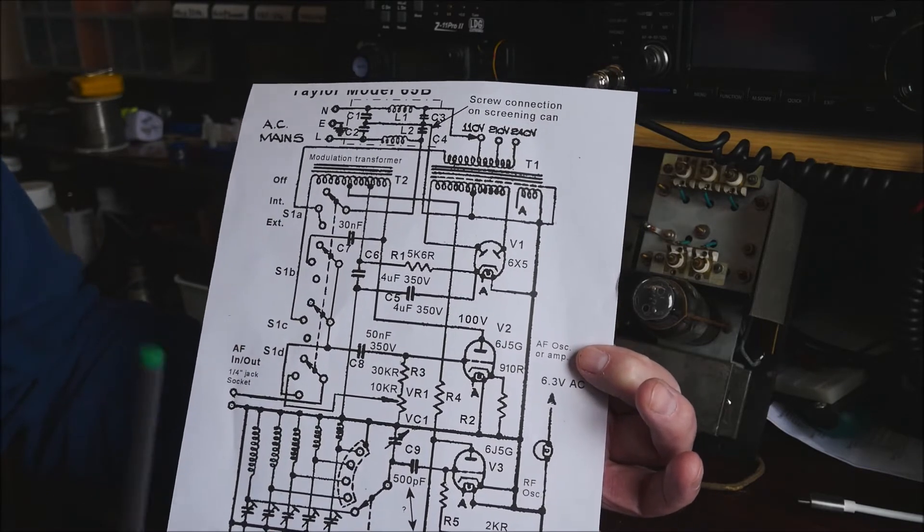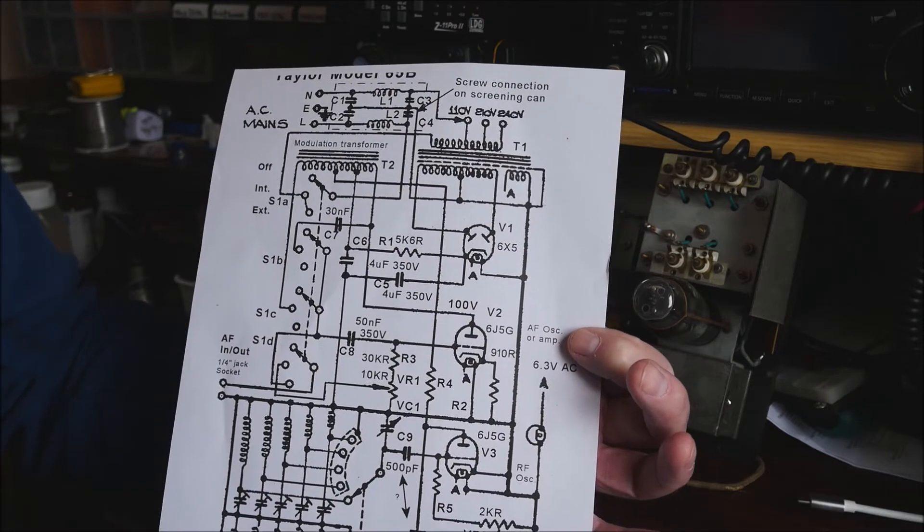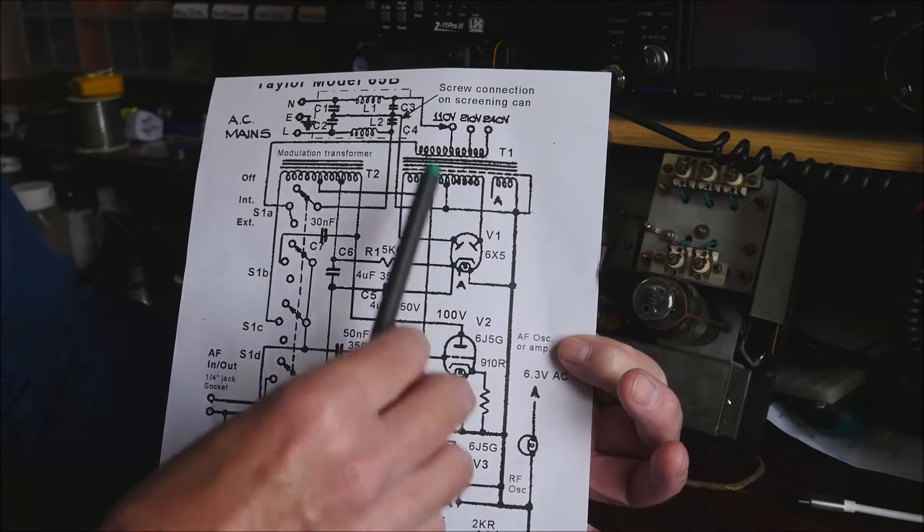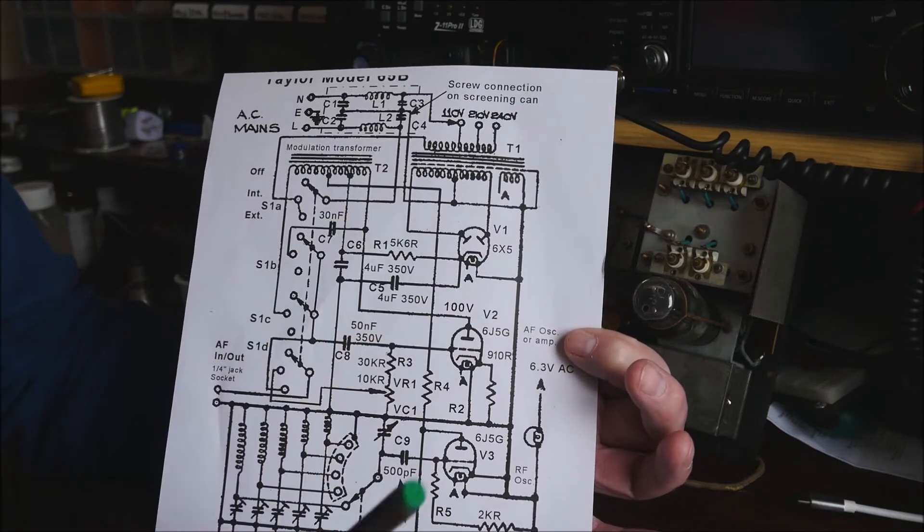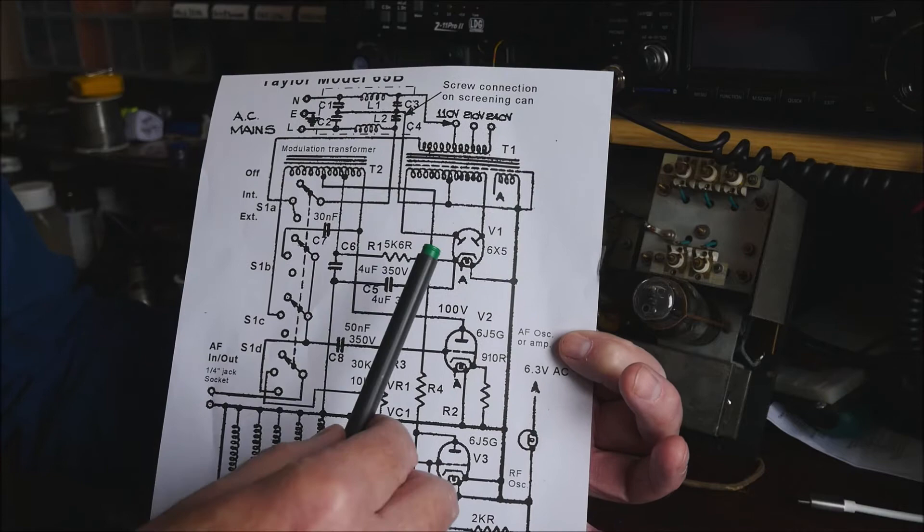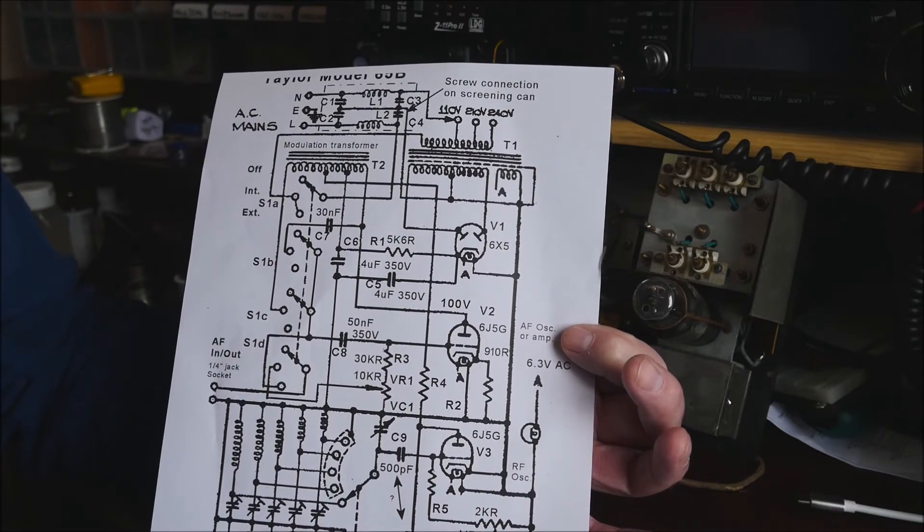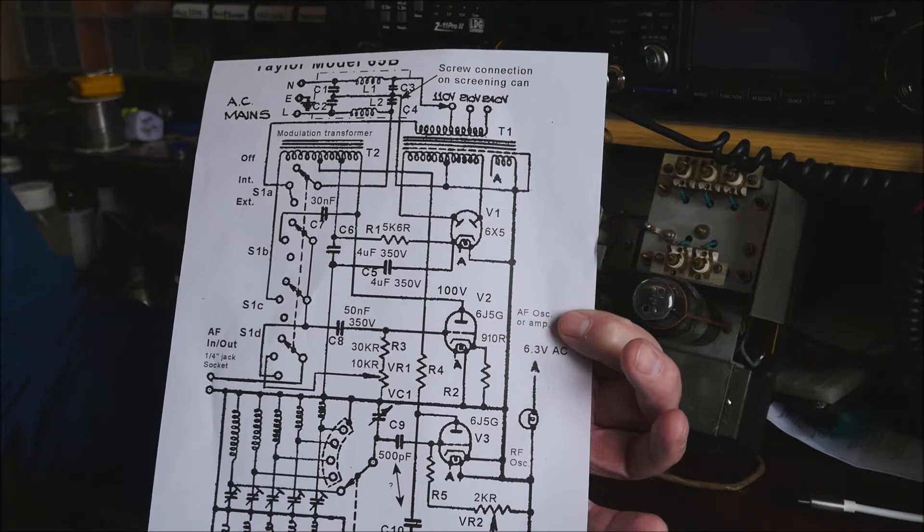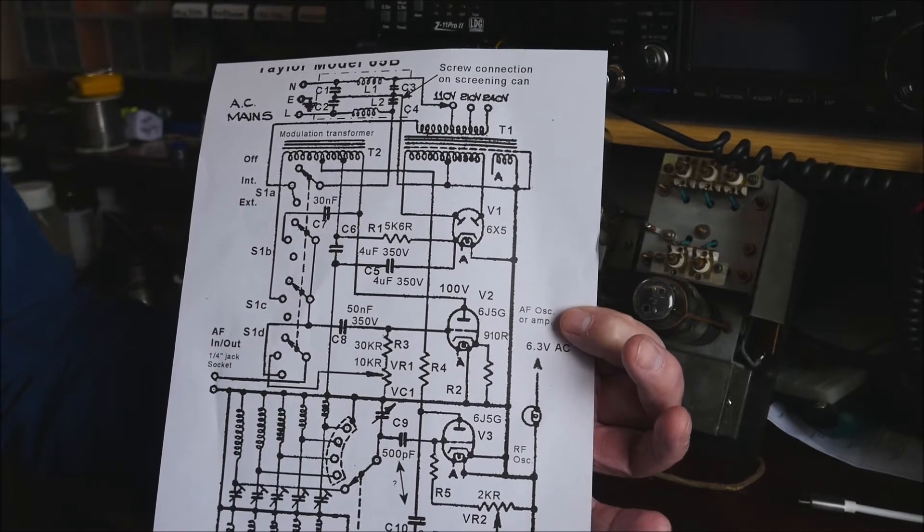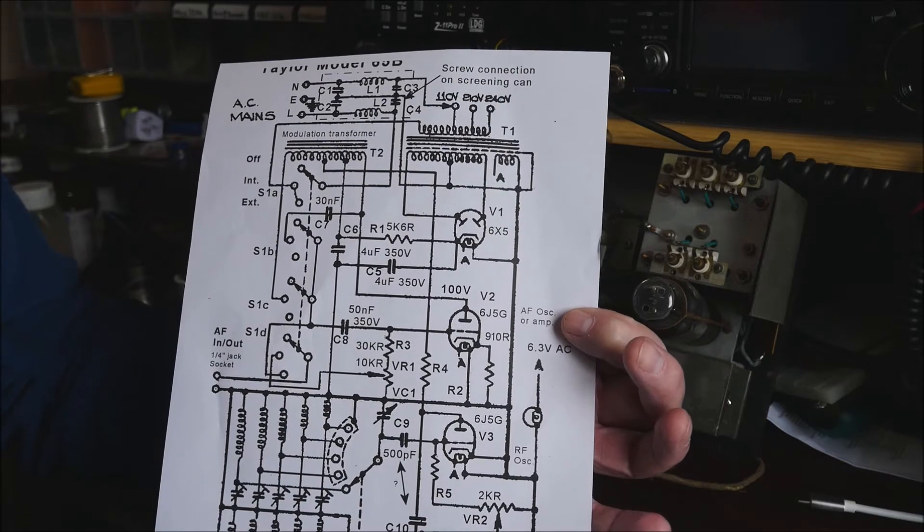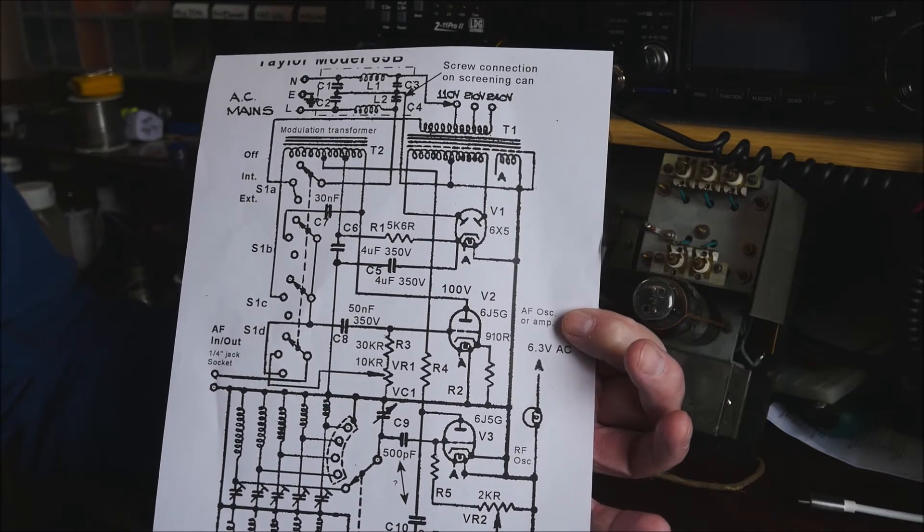Probably important to say at this point that because of the way valves work, they require a high voltage on the anode to attract the electrons from the heater through the cathode past the grids, depending on the type of valve. And so there's usually a fair amount of voltage in valve equipment that you simply wouldn't find in transistor equipment normally. So it's important to be careful. If you are opening up valve kit, you're doing it at your own risk. It's obviously potentially hazardous, so be careful.